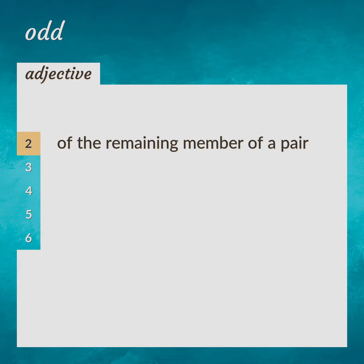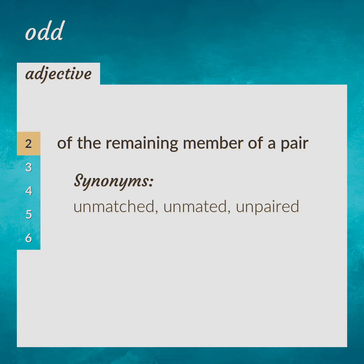Of the remaining member of a pair. An odd glove. Synonyms: unmatched, unmated, unpaired.